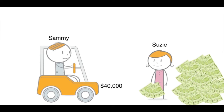As a footnote: if Sammy had a poor driving record, that's more risk to Susie, so she would have charged him more than $1,500. On the other hand, if Sammy had an exemplary driving record, Susie could have charged him less. Likewise with put options, the higher the perceived risk, the higher the premium demanded by the market.